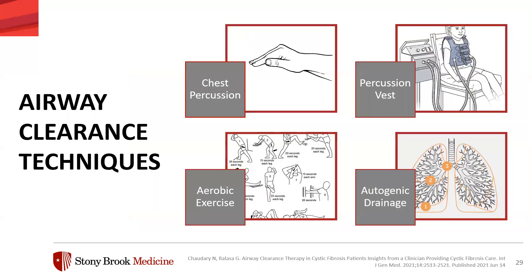For airway clearance techniques, first we have chest percussion and vibration — a cupped hand pounding on the chest wall to loosen and drain the mucus. Then a percussion vest using high-frequency chest wall oscillation. Aerobic exercises are strength-based activities important for bone health and muscle strength. Lastly, autogenic drainage is a breathing technique using different speeds of breathing to move the mucus — a learned technique of unsticking, collecting, and evacuating the mucus.